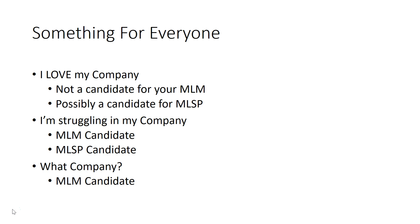The second prospect is struggling — they may love their company or they may not. Their upline may have left, they can't get to the next level, or they're unhappy with their comp plan. That person is a candidate for a new MLM opportunity, especially if I'm positioned as a leader and authority. They're also a candidate for MLSP because I can help them get more leads, more prospects, and more customers.